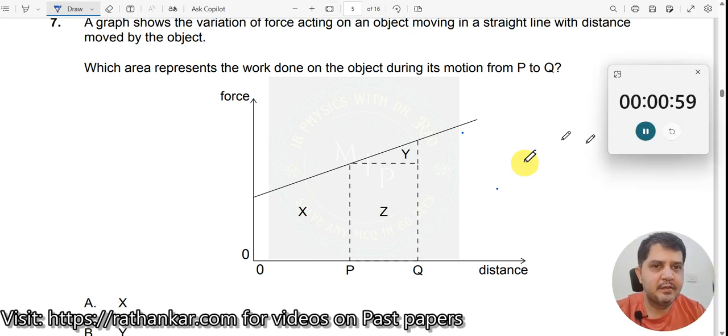Okay, question number 7. The graph shows the variation of force acting on an object moving in a straight line with the distance moved by the object.